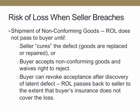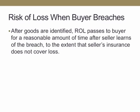A buyer could revoke acceptance after they discover a latent defect. In that situation, the risk of loss would pass back to the seller to the extent the buyer's insurance doesn't cover it. Risk of loss when the buyer breaches: after the goods are identified, the risk of loss passes to the buyer for a reasonable amount of time after the seller learns of the breach, to the extent that the seller's insurance doesn't cover the loss.